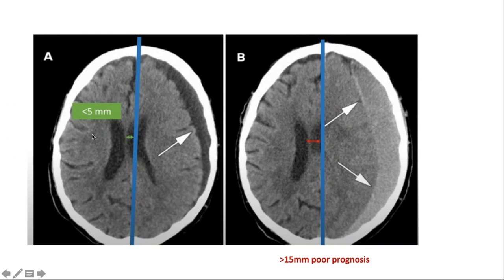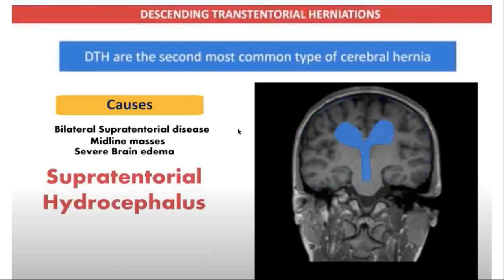Prognosis in subfalcine herniation depends on the degree of midline shift. A shift less than 5 mm generally indicates a good prognosis, while more than 15 mm indicates poor prognosis. Neurosurgical intervention may take place even with a shift less than 5 mm as a protective measure. The second most common type is descending transtentorial herniation — lateral or central — which can happen secondary to any supratentorial cause raising pressure with mass effect.